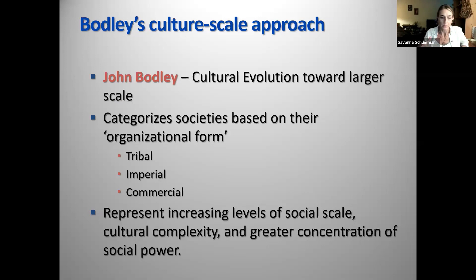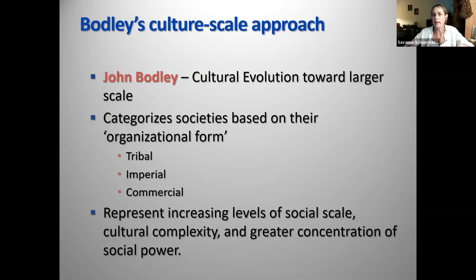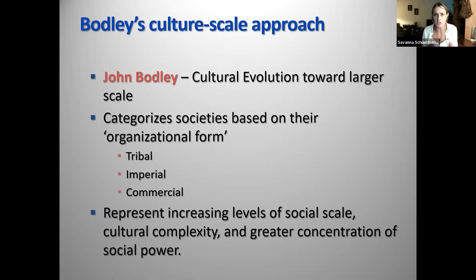At each level you see an increase in the social scale — the population is much larger, more cultural complexity, things become very specialized. Among the Kung hunter-gatherers, the shaman is also a hunter, also a dad, also all these other things. In industrial and post-industrial societies, we become highly specialized — think bureaucracy, think how many steps you have to jump through to get a signature at SDSU. That's what we mean by complex — more parts, not better. And at each level, you see a greater concentration of social power, meaning decision-making is becoming concentrated in fewer and fewer hands.